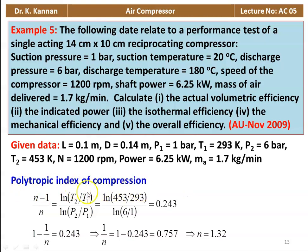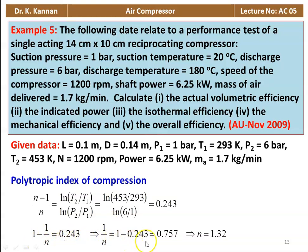Finding the polytropic index: (n-1)/n = ln(T2/T1) / ln(P2/P1) = ln(453/293) / ln(6/1) = 0.243. Rearranging: 1/n = 1 - 0.243 = 0.757, so n = 1.32. The polytropic index of compression is 1.32.